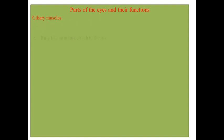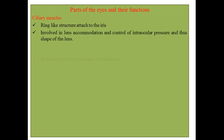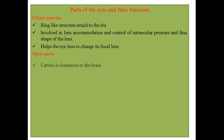The ciliary muscle is a ring-like structure attached to the iris. It is involved in lens accommodation and controls the intraocular pressure. This helps to shape the lens — so generally this structure helps the lens change its focal length.